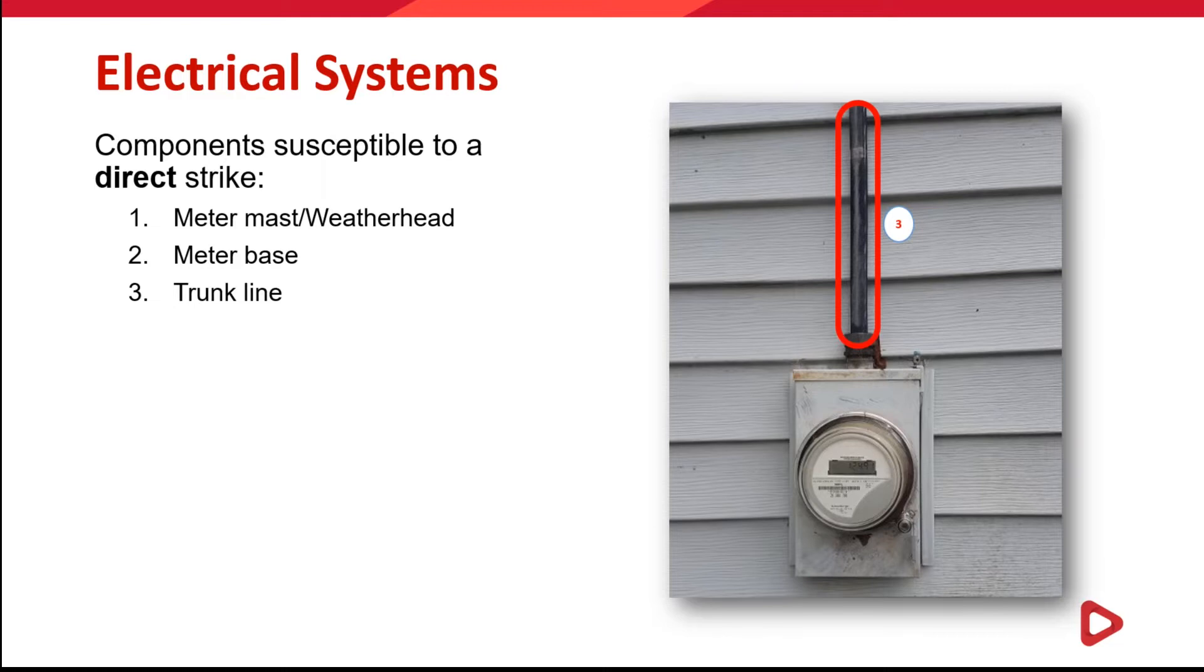If the house does not have a meter mast to protect the service entrance wiring, then it would be exposed like we see here. This type of wire that is designed for exterior installation is called trunk line, and this installation method is common and does put that wire at higher risk of getting hit by lightning.